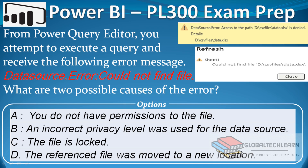Option C: 'The file is locked' — we get this message when the source file is open and we try to refresh data from Power BI Desktop. This has no dependency on access to the data or the file being unavailable at the source. Option D: 'The referenced file was moved to a new location' — this could be the cause if the file has been removed from the given path. So let's verify options A and D in Power BI Desktop.